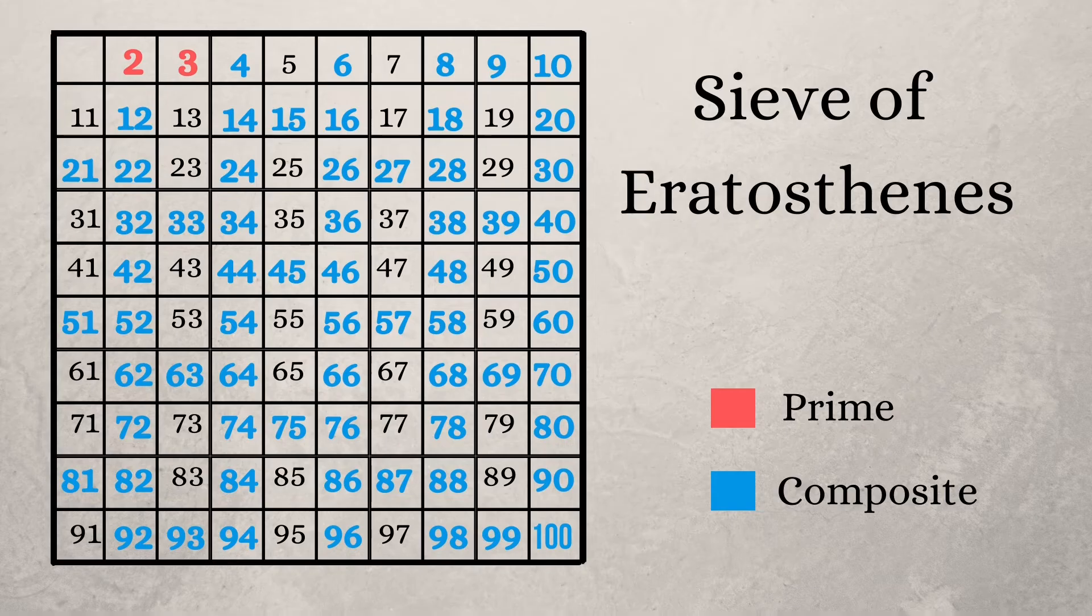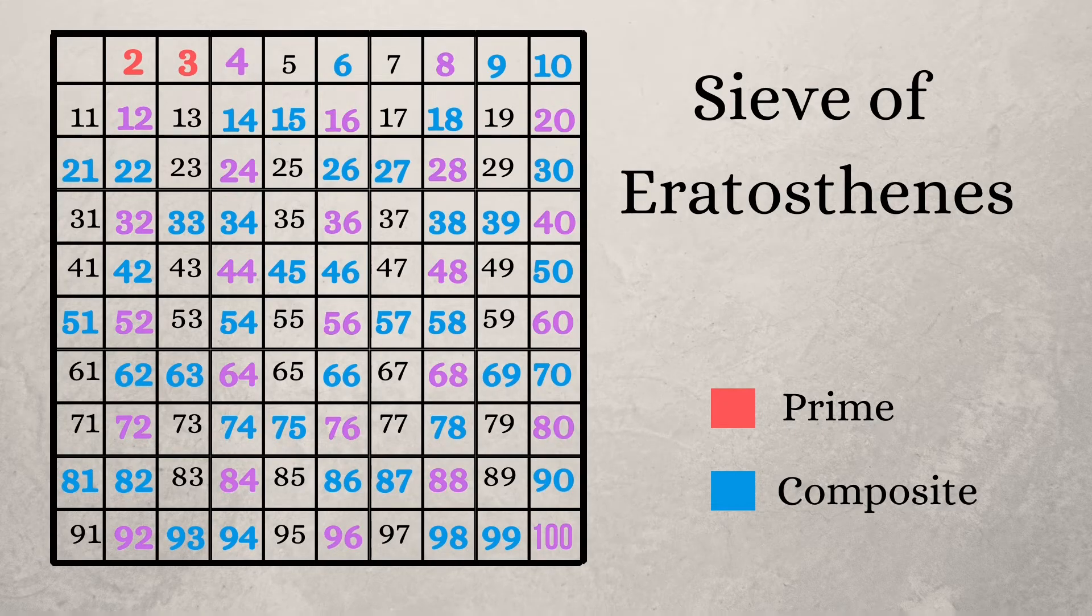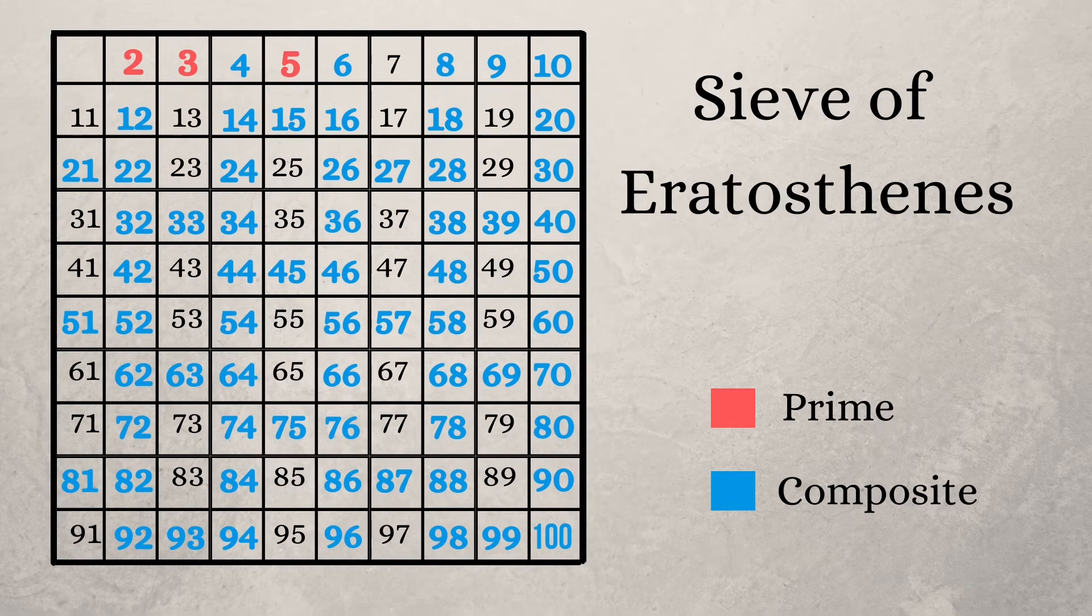The next number four is already marked as a composite, so we are not going to find out the multiples of four. Why so? If you look closely, it's already found in the multiples of two. So we move on to the next unmarked number, and that is five. Now five will be marked as a prime number.